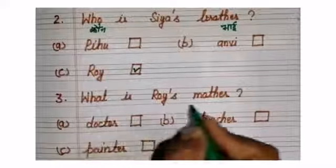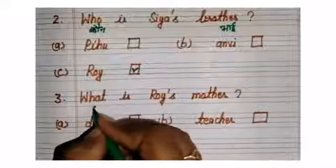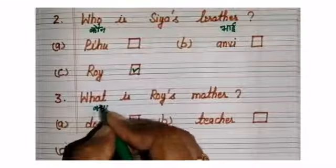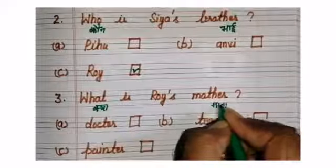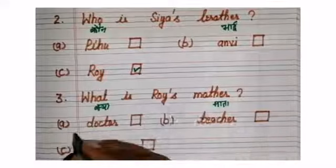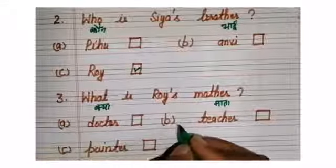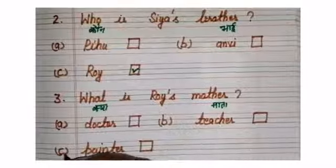Number 3, What is Roy's mother? What means kya? Mother, Mata ji. Roy ki mother kya hai? Option A, doctor. Option B, teacher. Option C, painter.